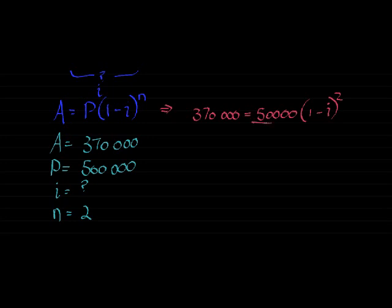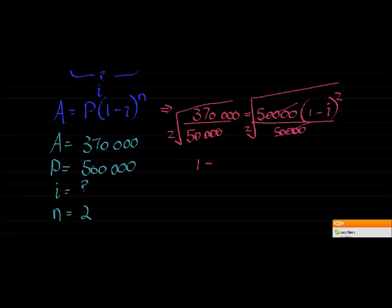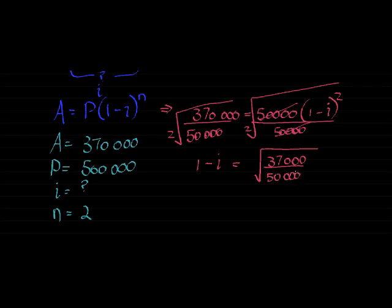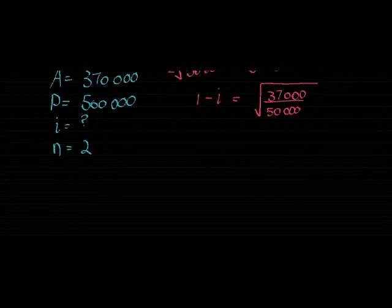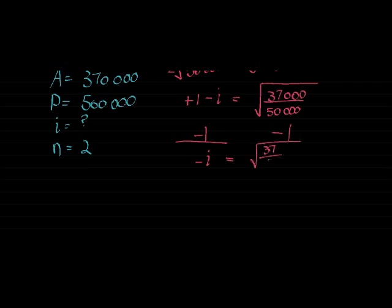And now, to solve this, divide both sides with 500,000, trying to get i on its own. Then we need to take the square root on both sides, since we are getting rid of the square, and that leaves us with 1 - i = √(370,000/500,000). And here I don't yet use my calculator to get an answer. I'll do everything at the same time when I'm on my calculator.